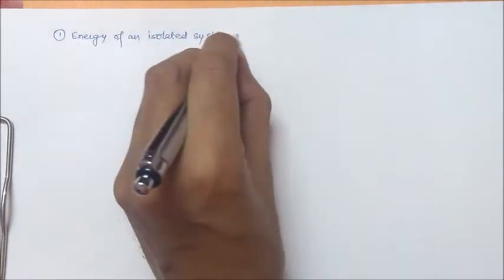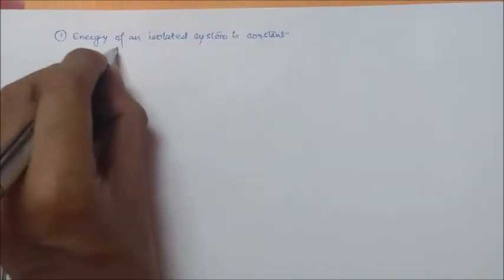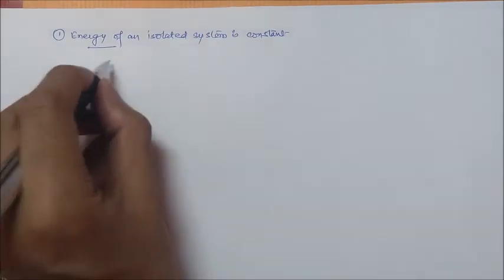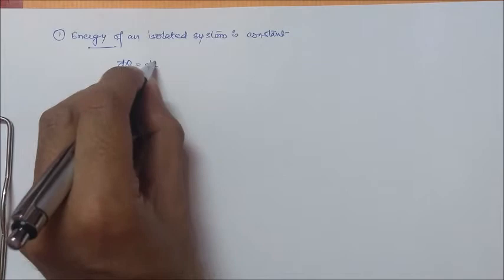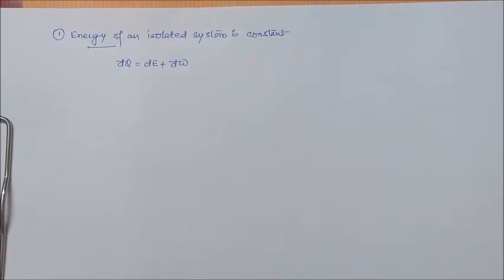First is energy of an isolated system is constant. From the first law of thermodynamics, for a process, we know that δQ is equal to dE plus δW.